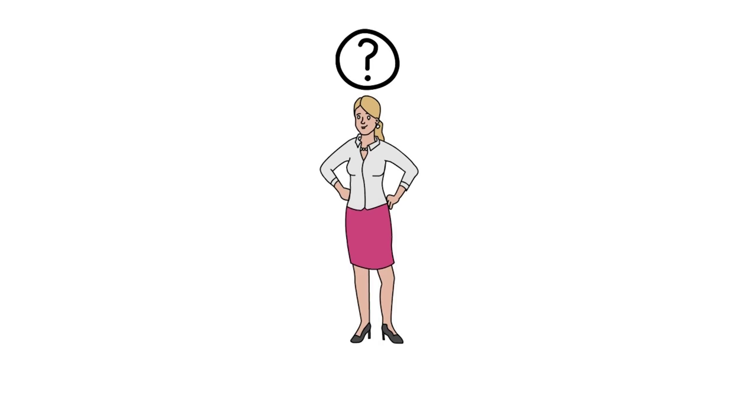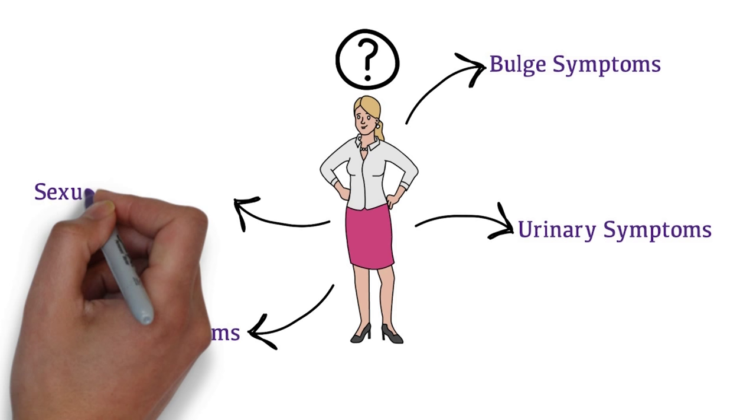You can group the symptoms of pelvic organ prolapse into 5 categories: Bulge symptoms, urinary symptoms, bowel symptoms, sexual dysfunction and other symptoms.